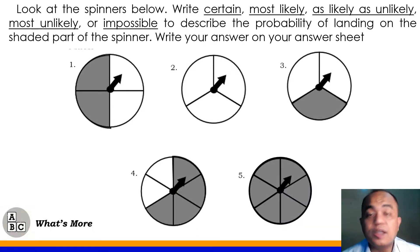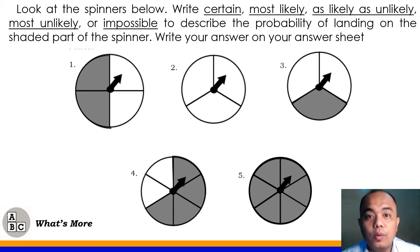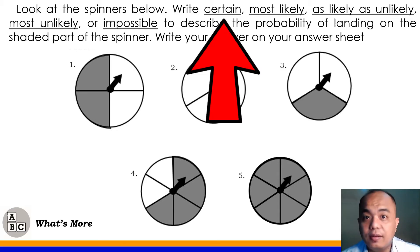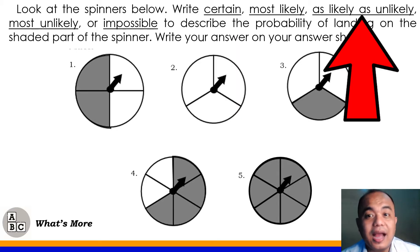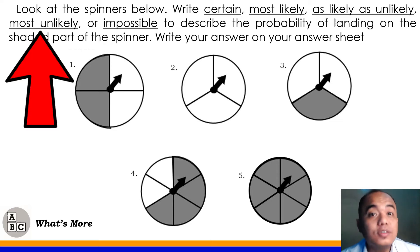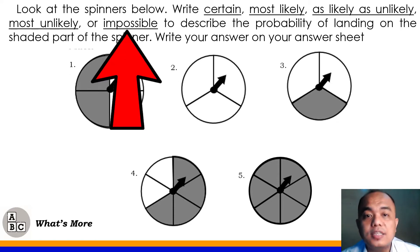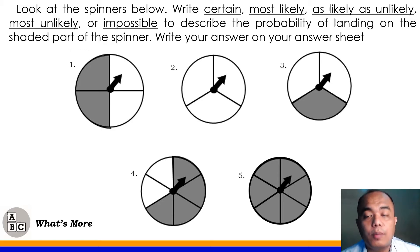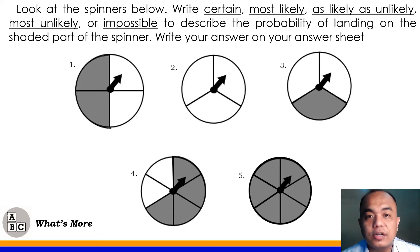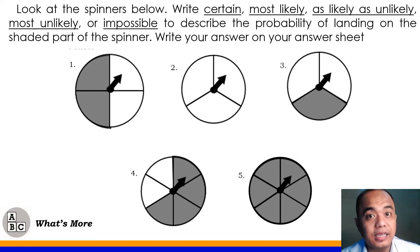Now, this is the What's More part of your Module 6. Look at the spinner below. Write certain, most likely, as likely as unlikely, most unlikely, or impossible to describe the probability of landing on the shaded part of the spinner. What you see now on the screen are examples of spinners. We will get the probability of the shaded parts of our spinner.